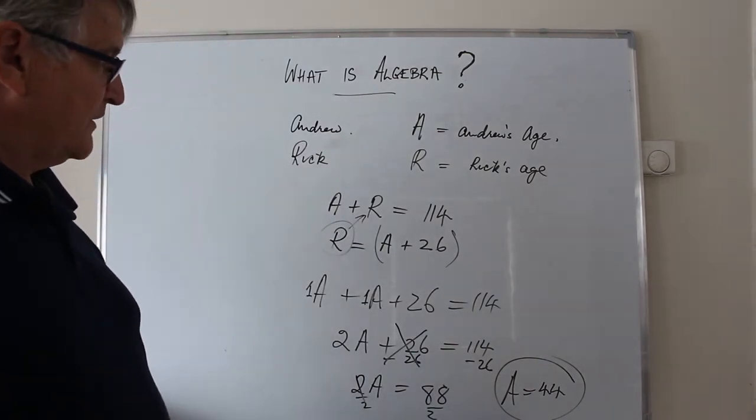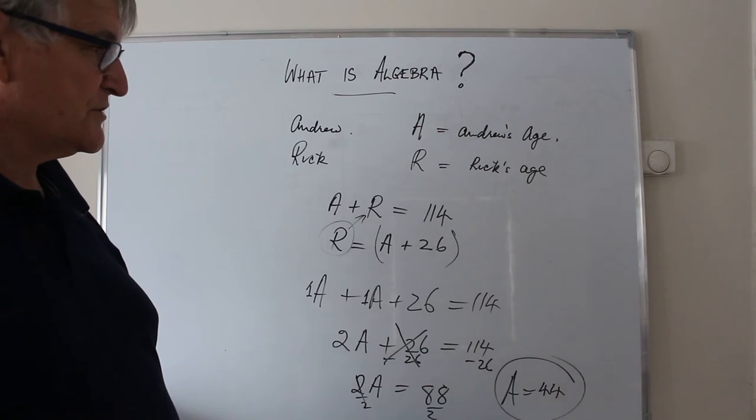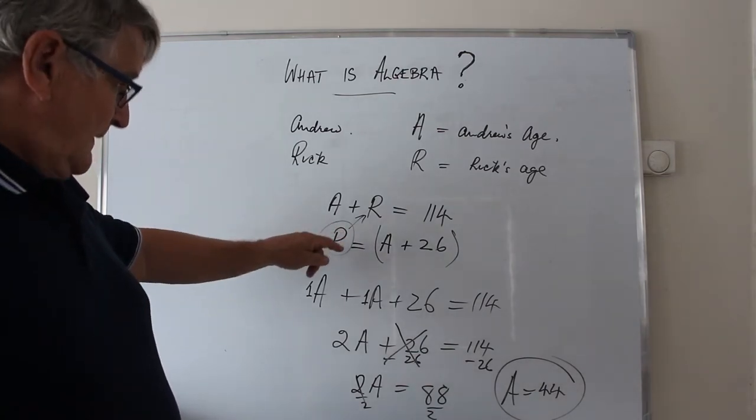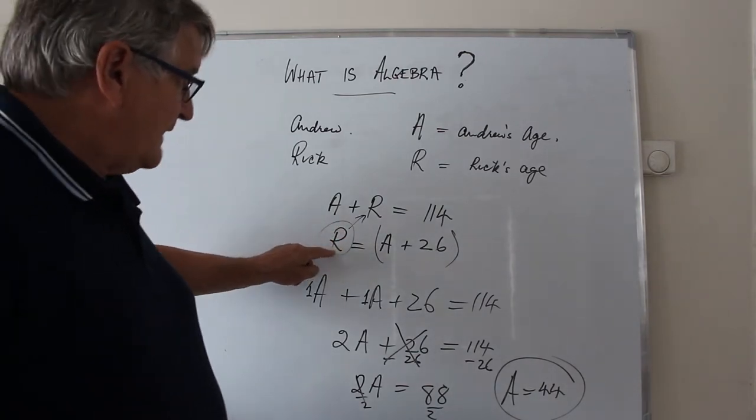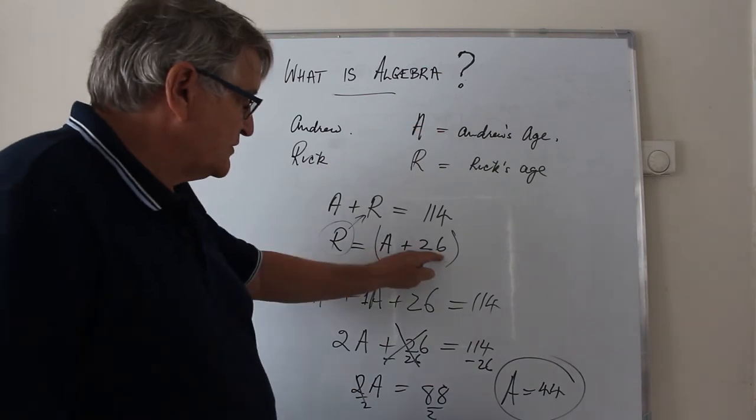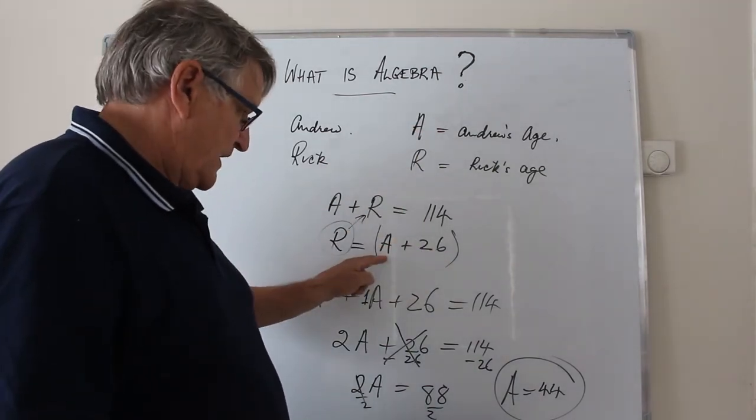And then instead of the verbal expression that I am 26 years older than my son, we've used the expression R, Rick's age, is 26 years more than Andrew's age.